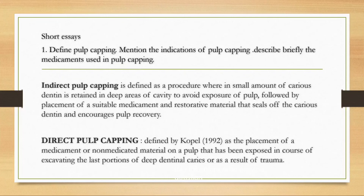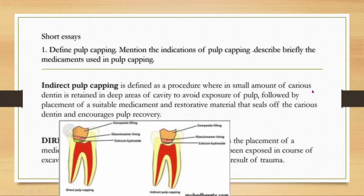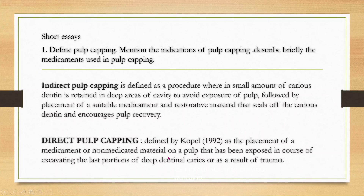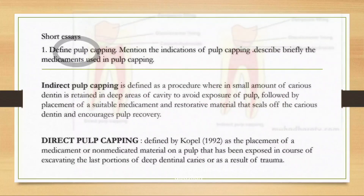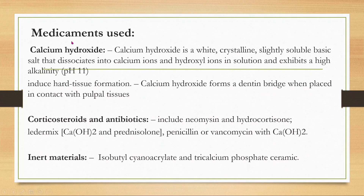Pulp capping methods — indirect and direct. Indirect pulp capping is defined as a procedure wherein a small amount of carious dentine is retained in the deep areas of the cavity to avoid pulp exposure, followed by placement of a suitable medicament and restorative material which seals the carious dentine and encourages pulp recovery. Direct pulp capping is indicated when there is a mechanical exposure due to a rotary instrument; we place a medicament or non-medicated material on the pulp, or it may occur when excavating the last portion of deep dental caries.